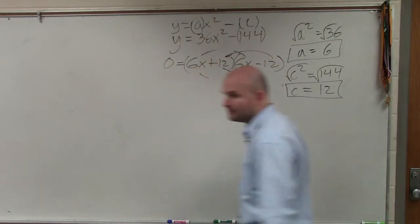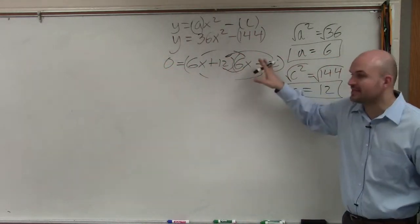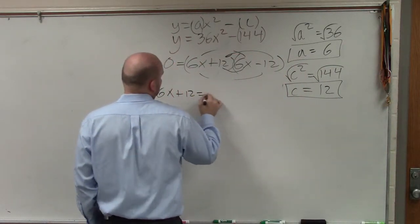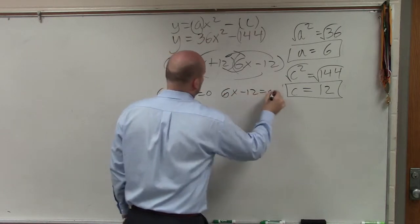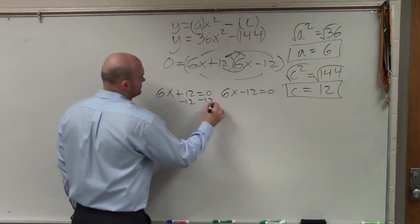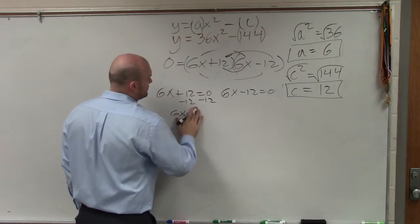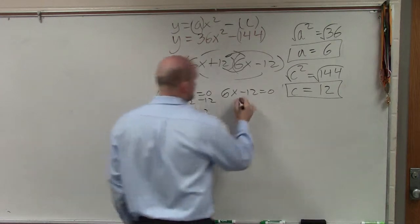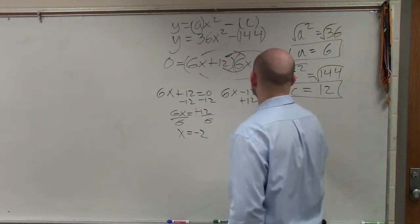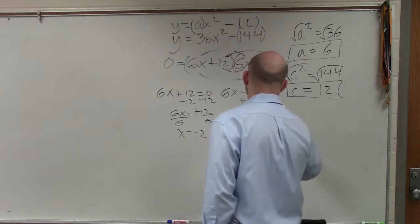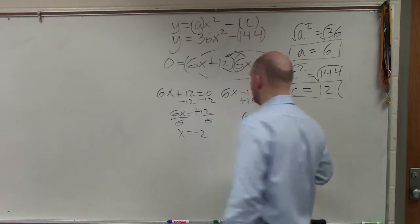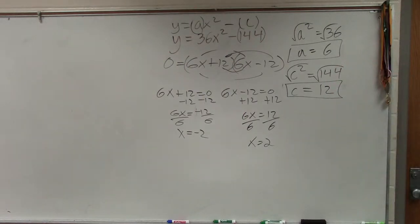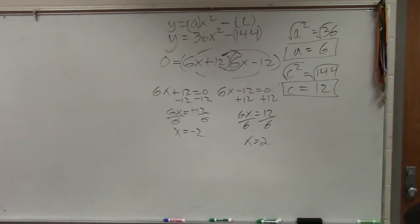However, we are not done. Once you have the two factors multiplied to give you 0, you set them both equal to 0. Subtract 12: 6x = -12, divided by 6, x = -2. Add 12: 6x = 12, divided by 6, x = 2. Therefore, our two answers are x = -2 and x = 2. Does everybody see that?